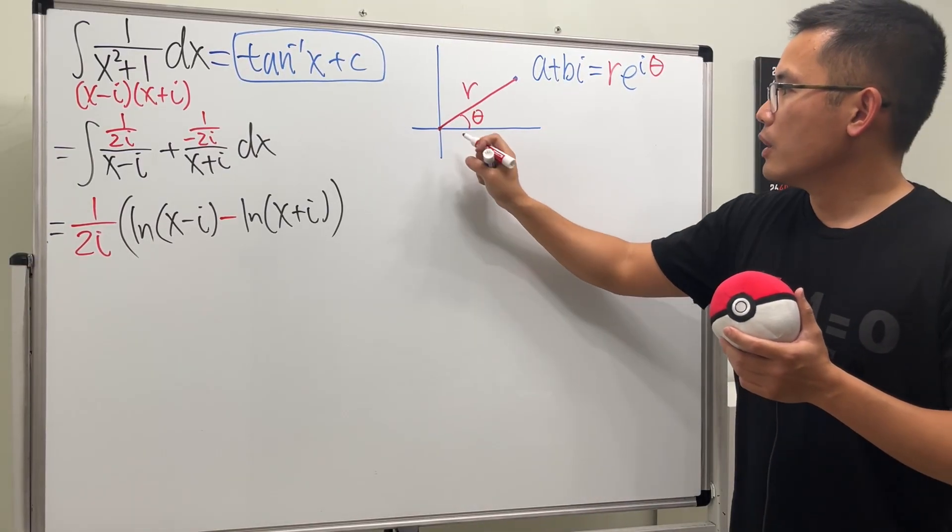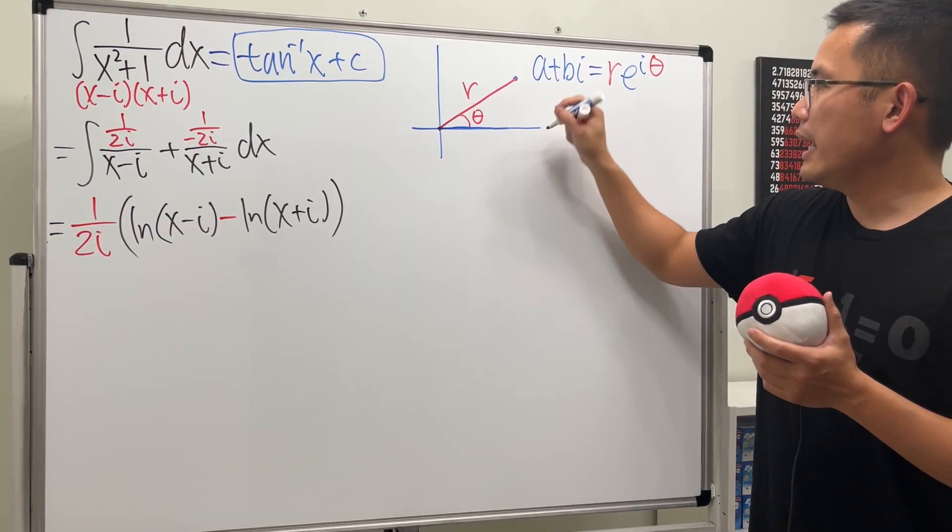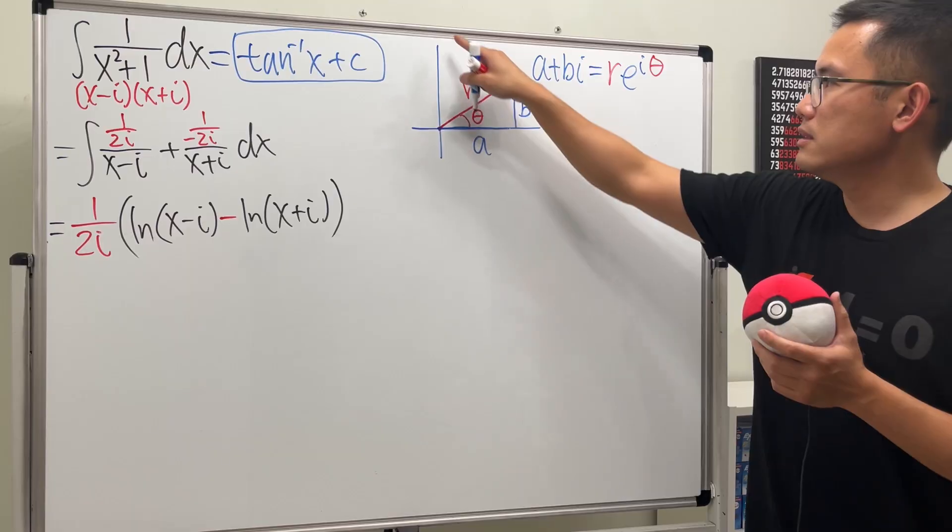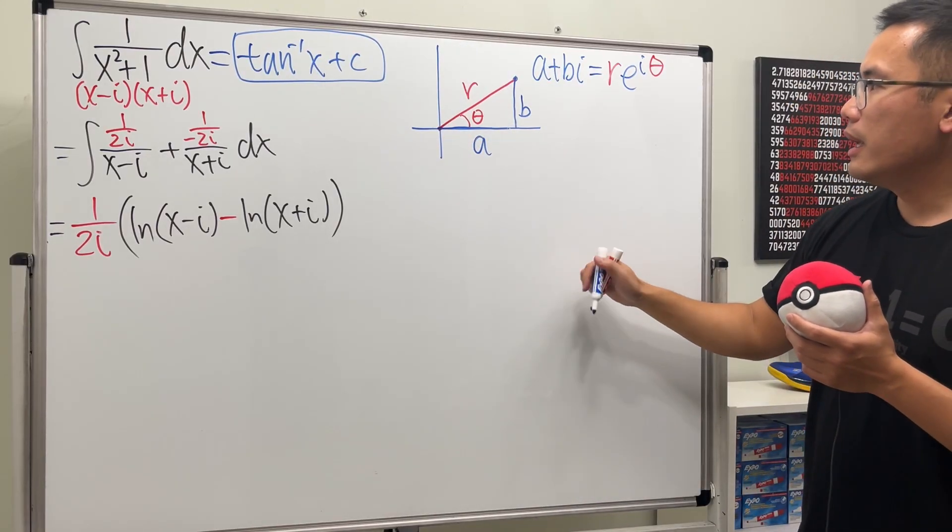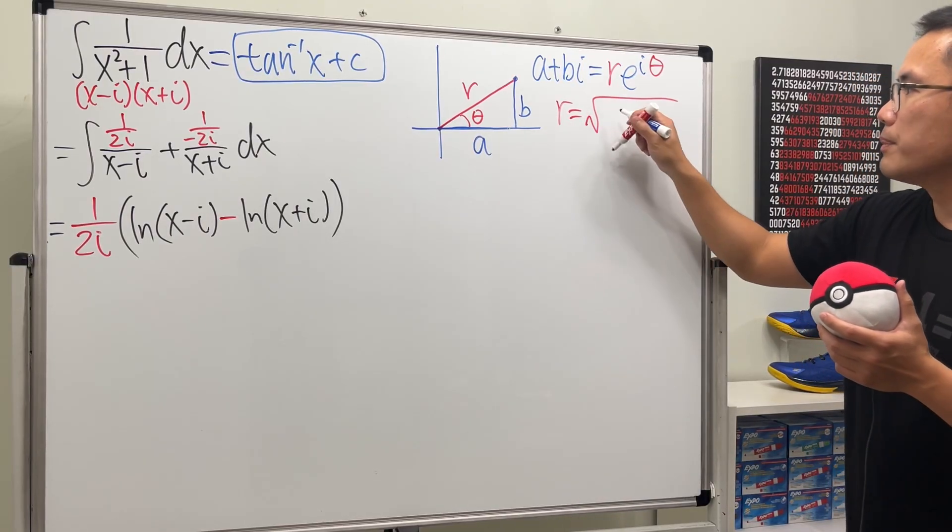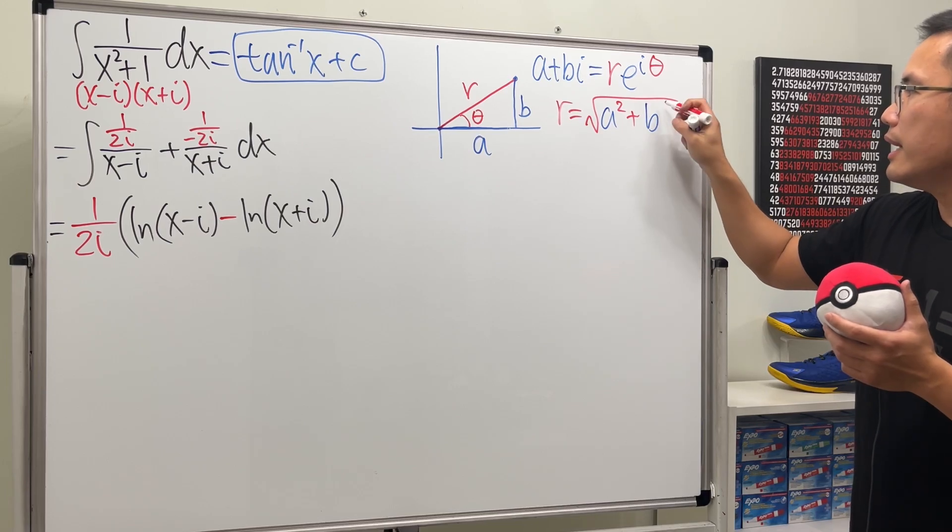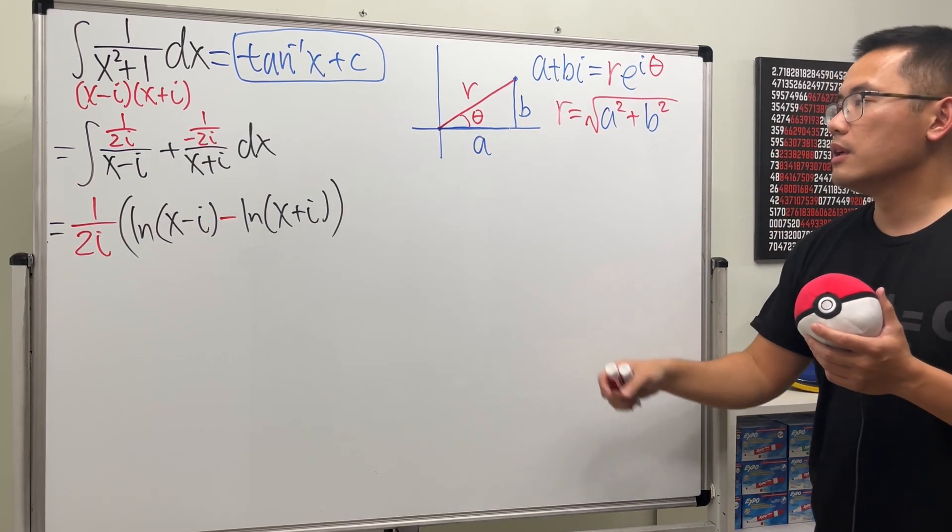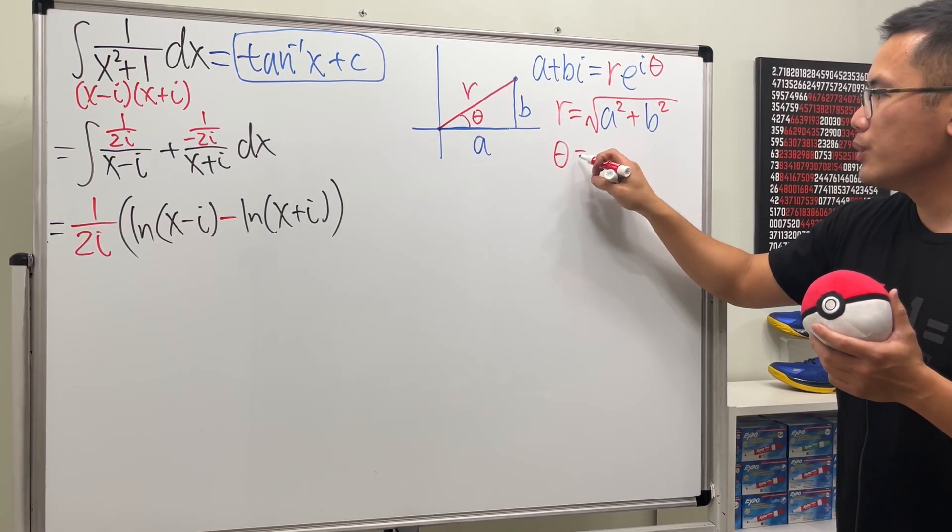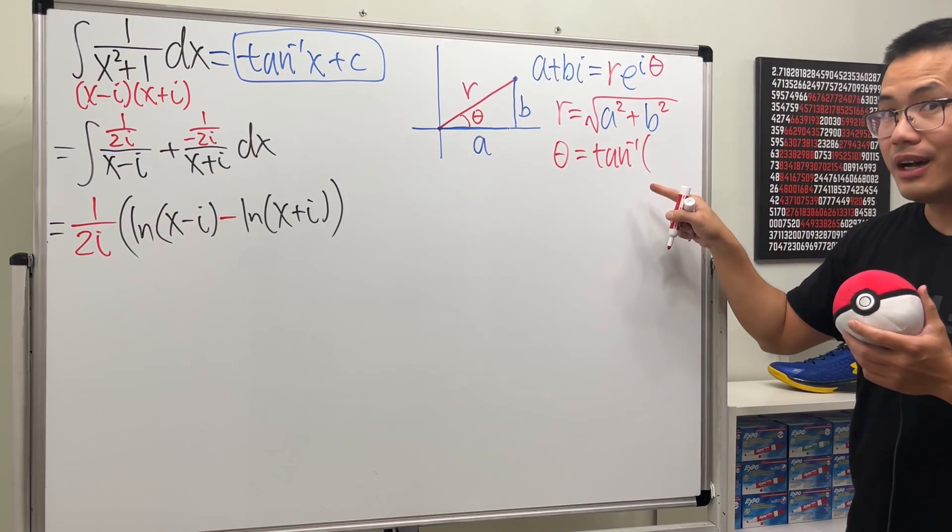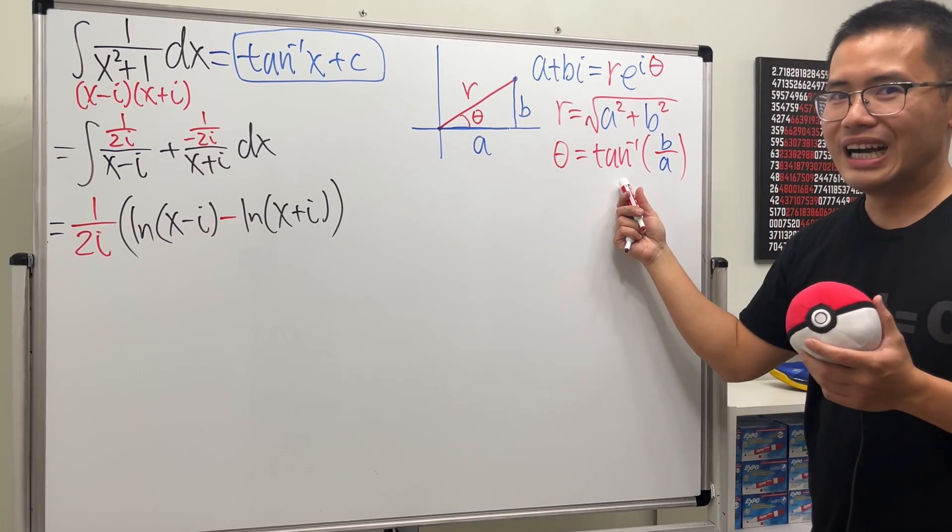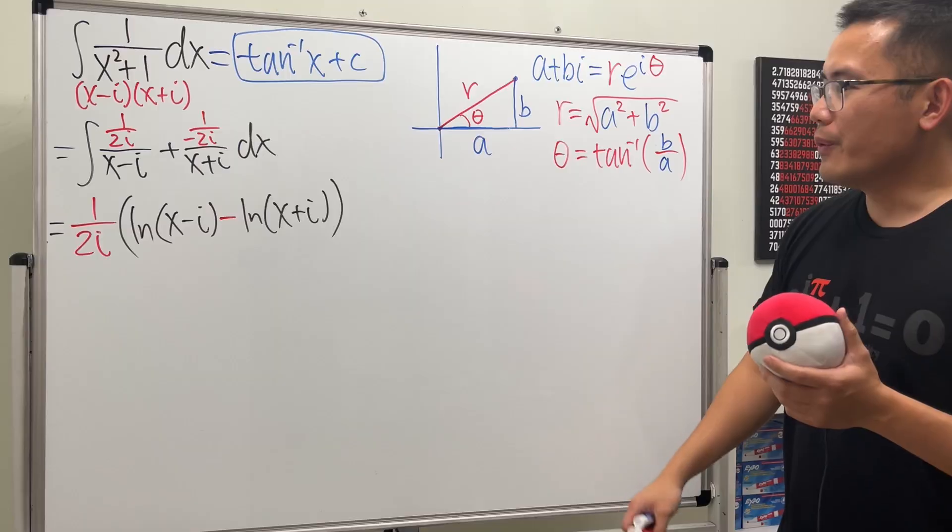All right, so now let's see. We know the horizontal distance is the a, and then the vertical distance is the b, because this is the real axis, this is the imaginary axis. So right here, we can say r, thanks to the Pythagorean theorem, is the square root of a squared plus b squared. And then, for the angle theta, we can use tangent, and we can say tangent theta equals opposite over adjacent, or we can say theta is equal to inverse tangent of opposite over adjacent. Aha, we have a good hope of coming up with the inverse tangent, right? Cool.